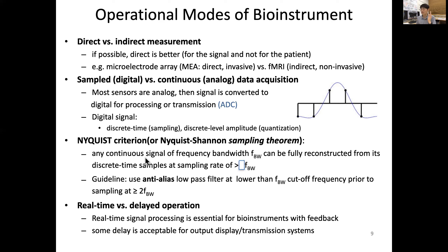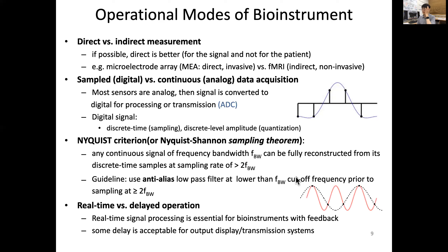So any continuous signal with bandwidth F_BW can be fully reconstructed from discrete time samples if the sampling rate is at least twice the bandwidth — that is the key point of the Nyquist criterion. Let me show you another diagram to illustrate what happens when we do not meet this sampling theorem.